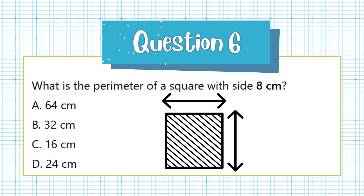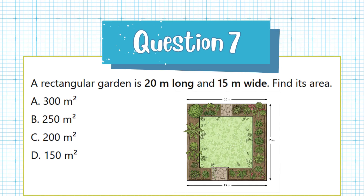Question 7. A rectangular garden is 20 m long and 15 m wide. Find its area. a. 300 square meters, b. 250 square meters, c. 200 square meters, d. 150 square meters.